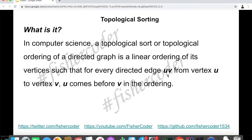In computer science, a topological sort or topological ordering of a directed graph is a linear ordering of its vertices such that for every directed edge uv from vertex u to vertex v, u comes before v in the ordering.